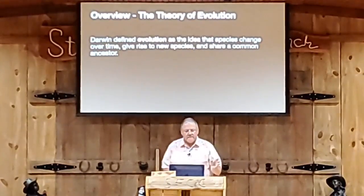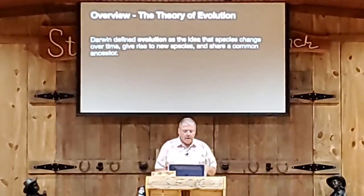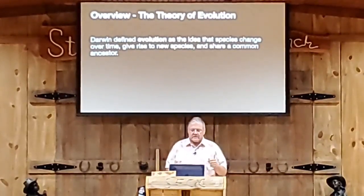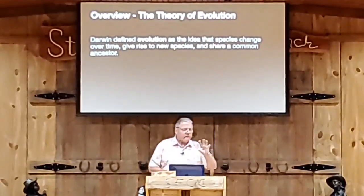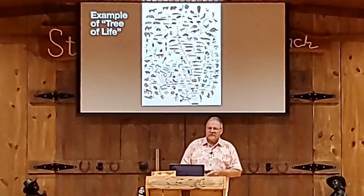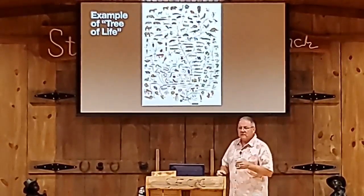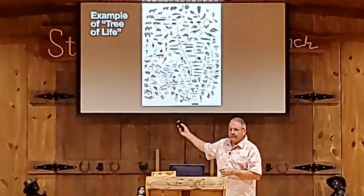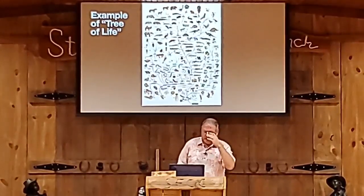Darwin defined evolution as the idea that species change over time, they give rise to new species, and they share a common ancestor. As a result of all that, you've all seen pictures of various animals — the tree of life. They still teach it. It's the tree of life.